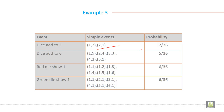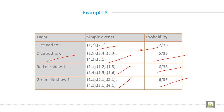Here is another example: dice add to 6. Here is the sample event and here is the probability. Red die shows 1 — here is the simple event and probability. Green die shows 1 — here is the simple event and here is the probability.